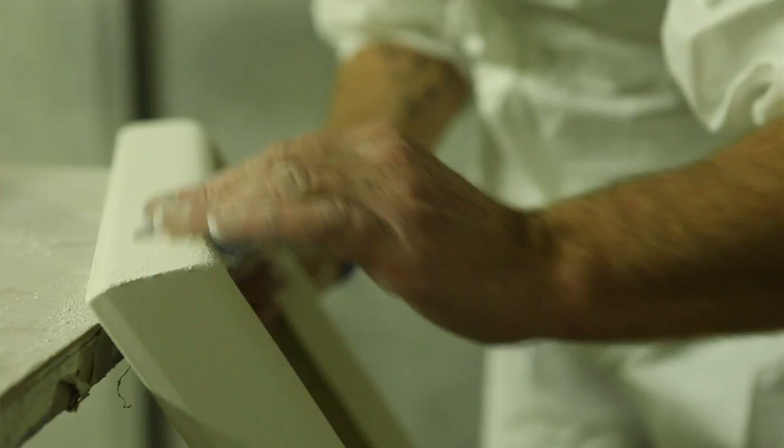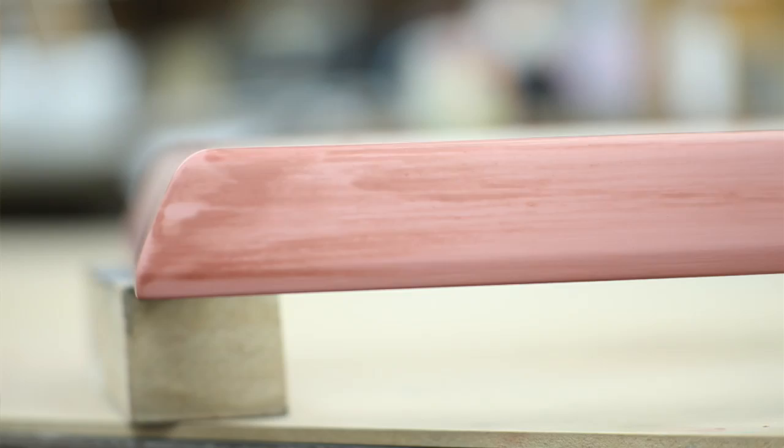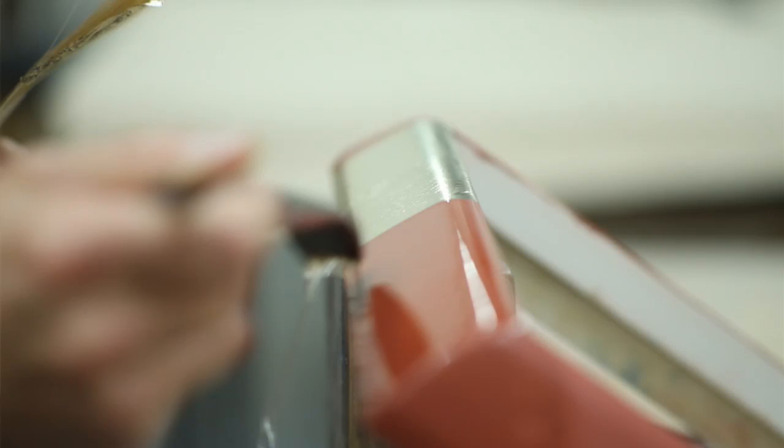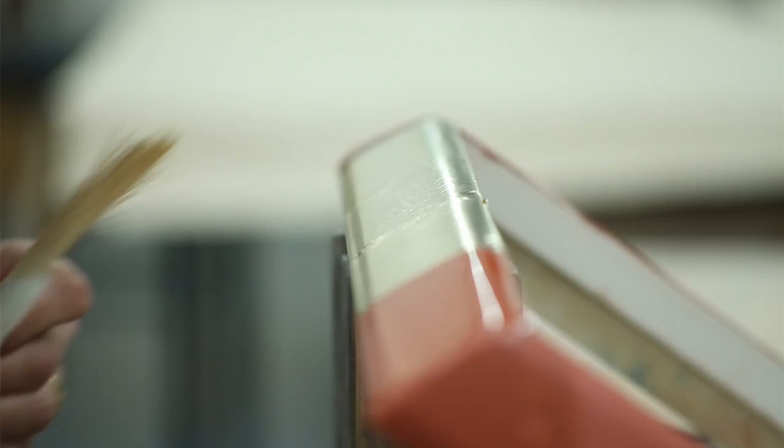It then goes into a system of being gessoed which is a very traditional method developed over years. But there's a lot of attention on what type of clay we want to use as a base and then what type of leaf, whether it be white gold, whether it be moon gold, whether it be gold, to actually apply on top of the clay.